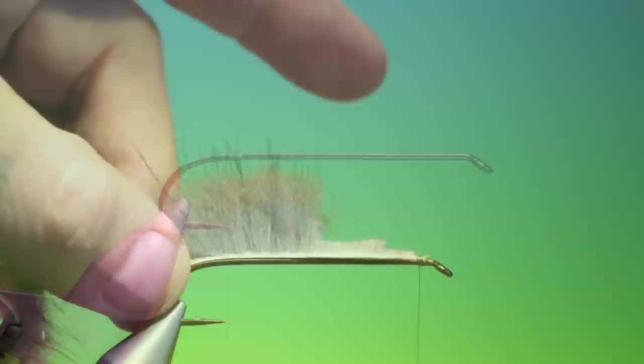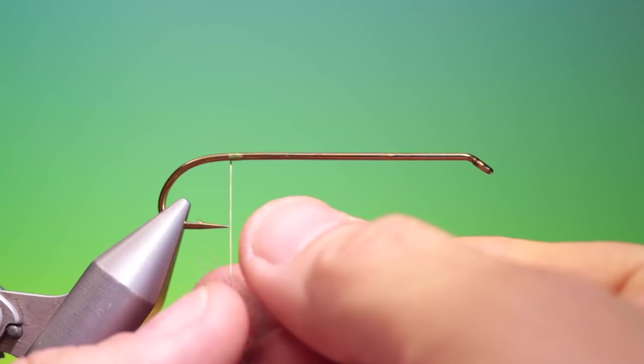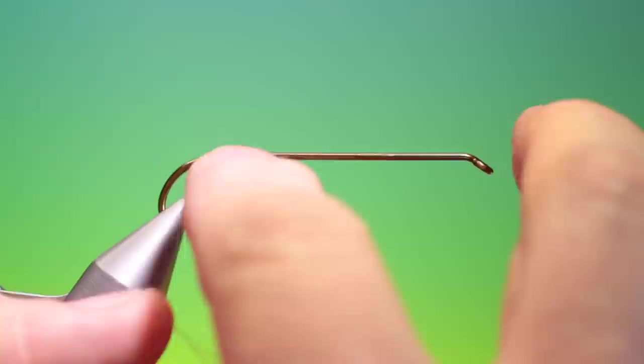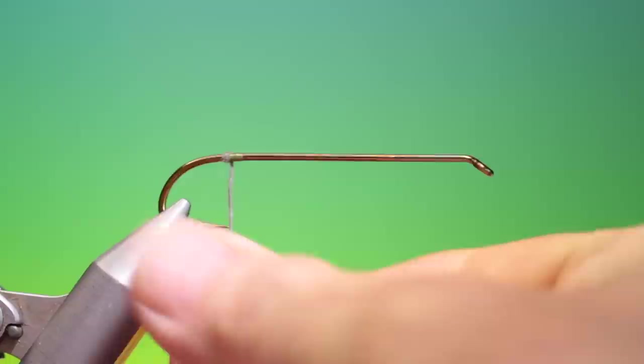Okay, the first dubbing is your long fibered under fur. Now don't take too much of this, we only need a little at a time. This is your classic dry fly dubbing. So we'll just attach that quite tightly and then we can slide it up. Catch it in with a couple of turns and then we can twist on what we require further.